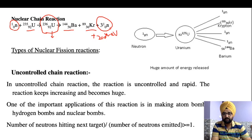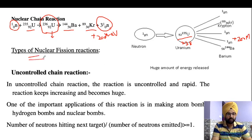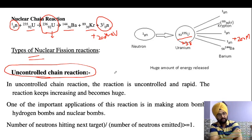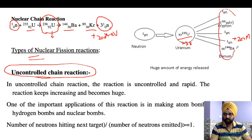You can also see from this figure that we take a mixture of uranium-235 and uranium-238. First, we will discuss the uncontrolled nuclear chain reaction, which I will explain in detail in the next slide.